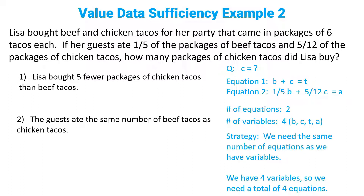Let's check each statement to see if we get two more equations. Statement one: Lisa bought five fewer packages of chicken tacos than beef tacos. What does that mean in math? That means C equals B minus five. We said we need two more equations to solve for C, but we only got one more equation in statement one. That means statement one is insufficient.